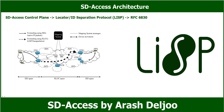This allows each router to manage only its local routes and query the map system to locate destination EIDs. When traffic arrives at the Ingress Tunnel Router (ITR), it only needs to ask the mapping server or mapping resolver to find the RLOC of the receiver Egress Tunnel Router (ETR). This technology provides many advantages for SD Access, such as a smaller routing table, dynamic host mobility for wired and wireless endpoints, address-agnostic mapping (IPv4, IPv6, or MAC), and built-in network segmentation through VRF instances.